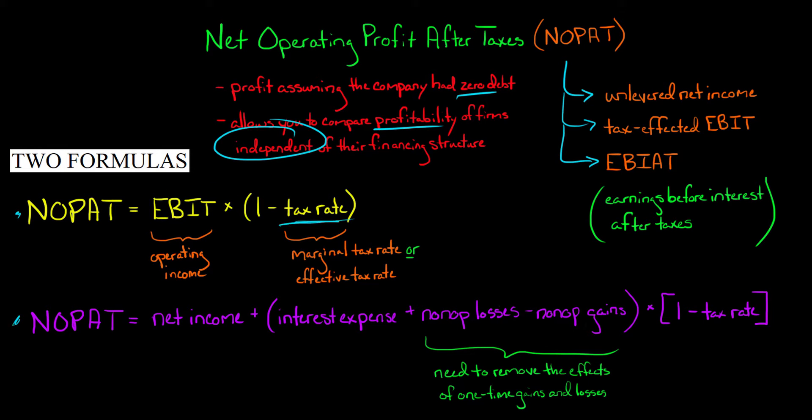When it comes to the company's tax rate, you've got a couple different options. Some people prefer to use the company's marginal tax rate, which is the tax rate the company would pay on an additional one dollar of profit. But other people prefer to use the company's effective tax rate. You can calculate the company's historical effective tax rate, or if you're trying to make projections, sometimes management will provide in its guidance what it thinks will be the effective tax rate going forward.